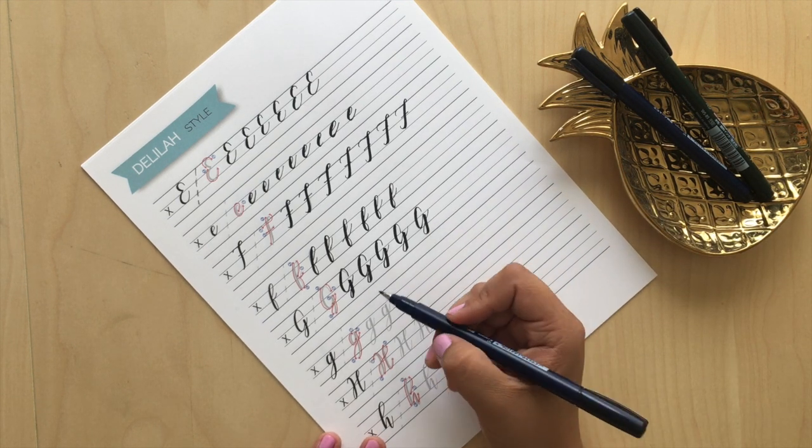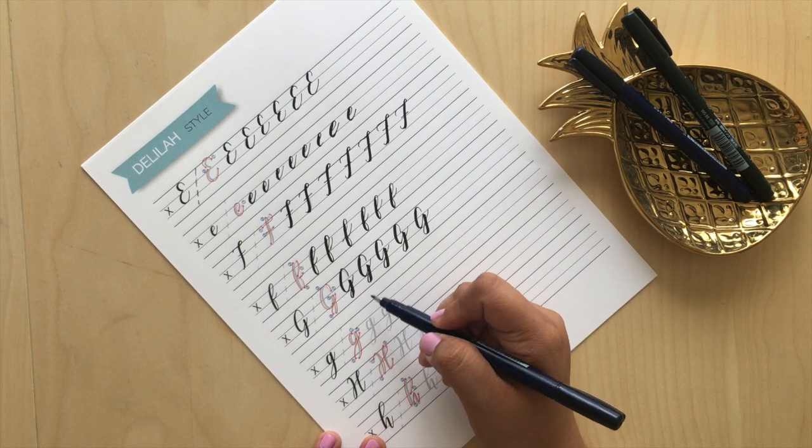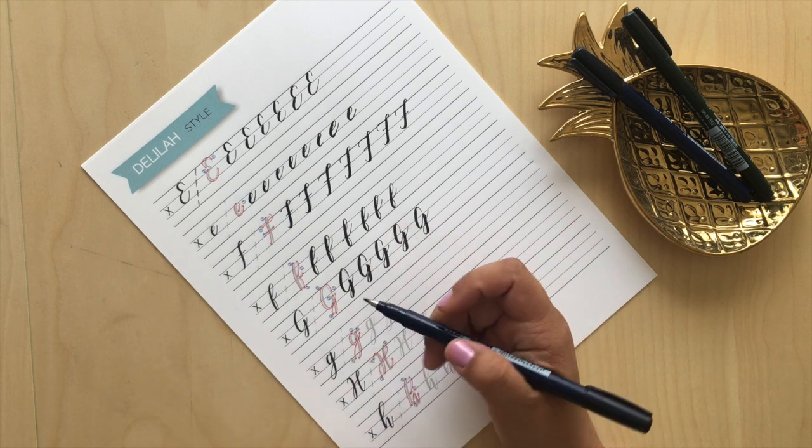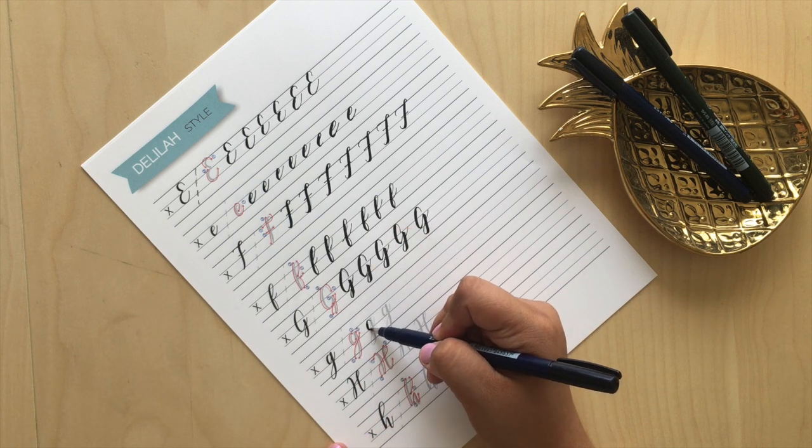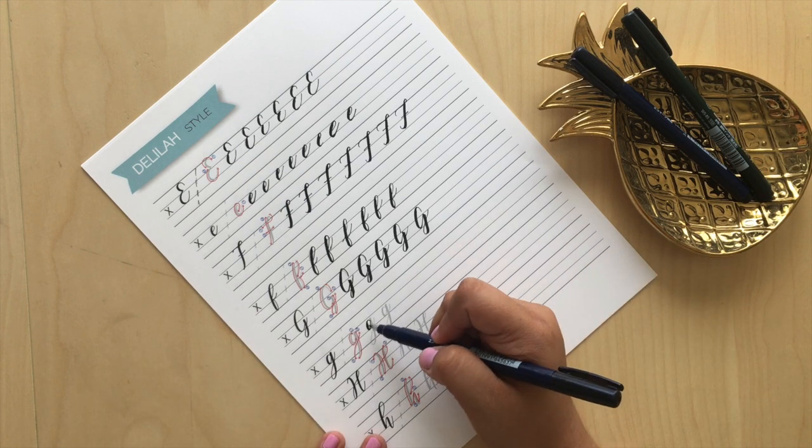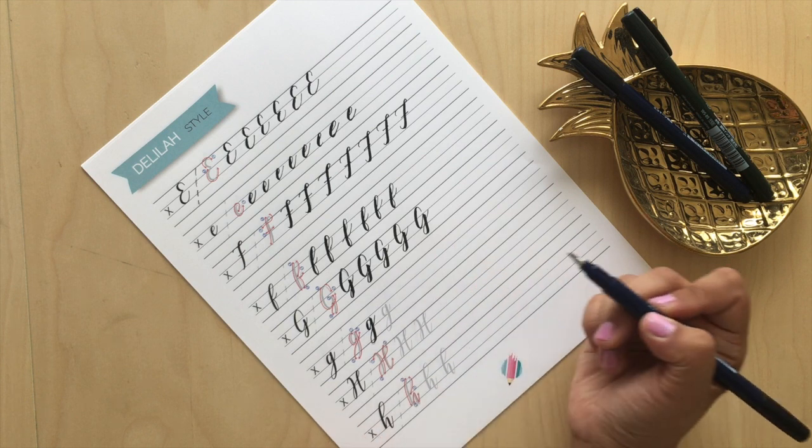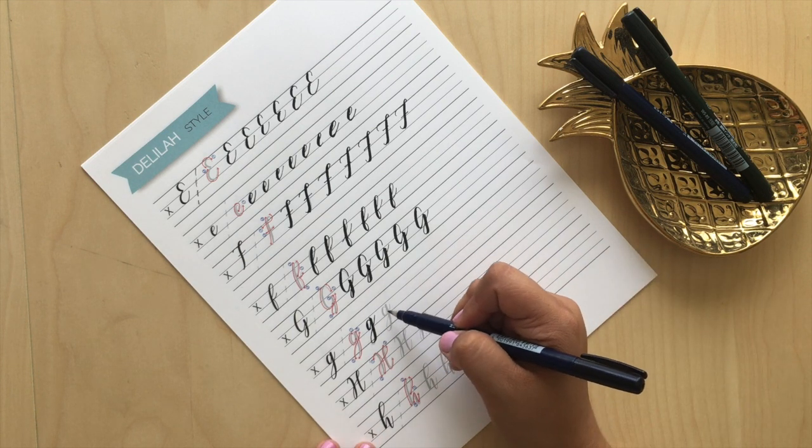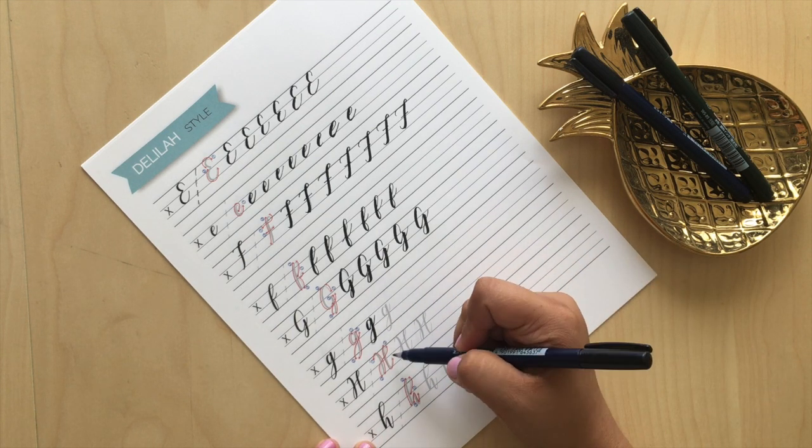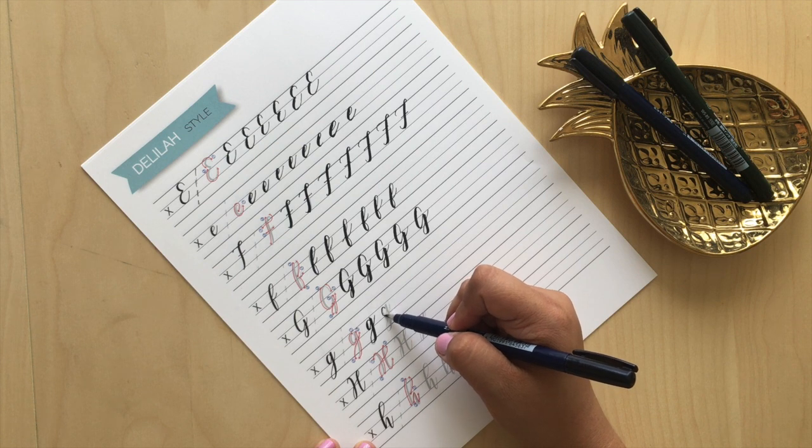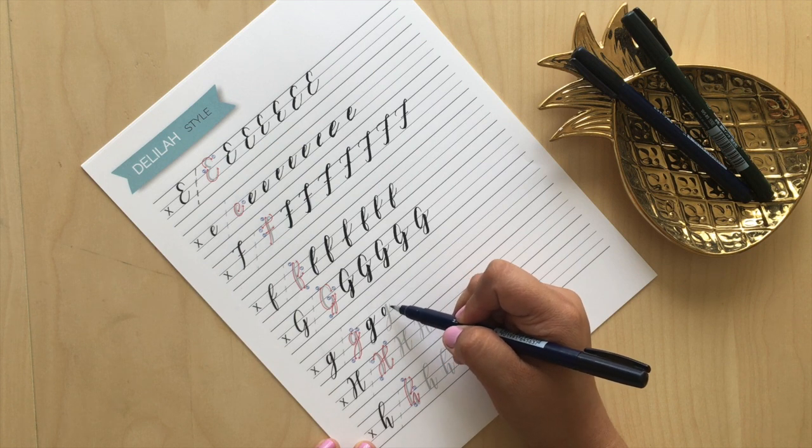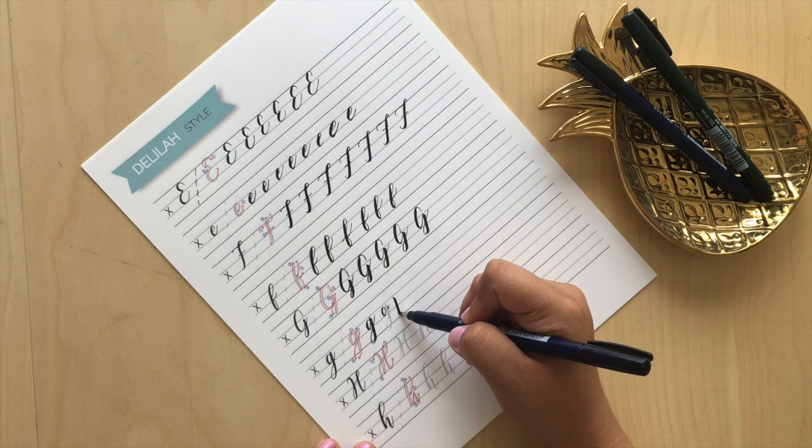With the lowercase g, very similar, just in a smaller format. You do your oval, you release, and then you come down with a thick stroke and come all the way back up. This is where you're doing an oval plus a descending stem loop.